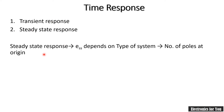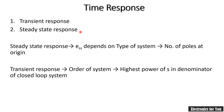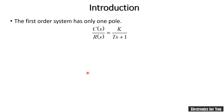The steady state response depends on the type of system. The steady state error ESS depends on the type of system, which is the number of poles at the origin. The transient response depends on the order of the system, which is the highest power of s in the denominator of a closed loop system.